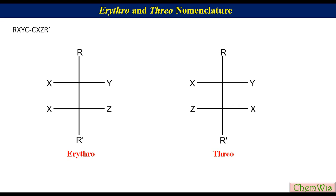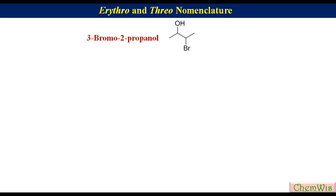Now we are going to take the example of 3-bromo-2-propanol. There are two chiral centers, so there will be four stereoisomers — two erythro and two threo diastereomers. Each diastereomer will have two enantiomers. For drawing an erythro diastereomer, draw an 'A' skeleton for the Fischer projection and put either the same or different groups on the vertical line.